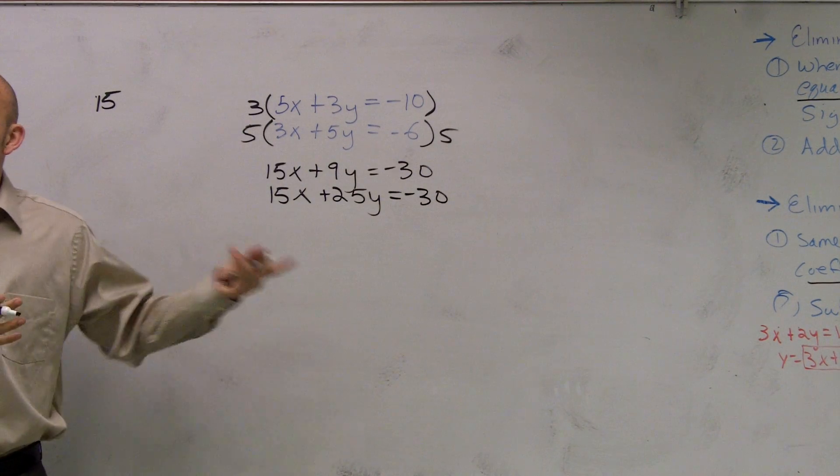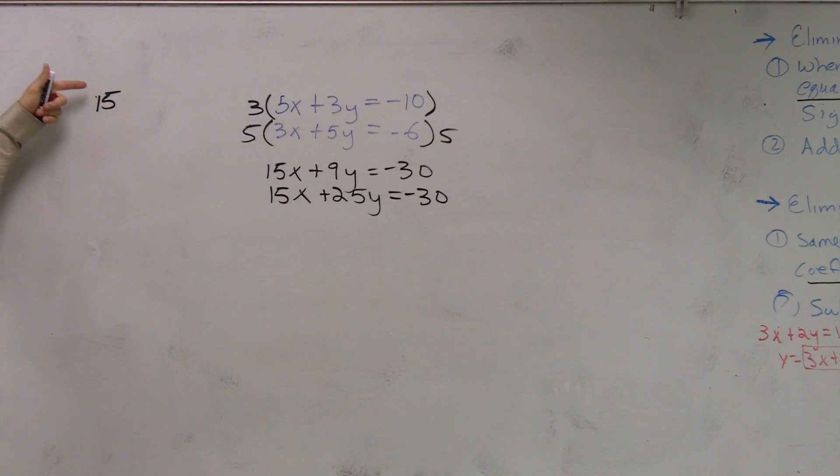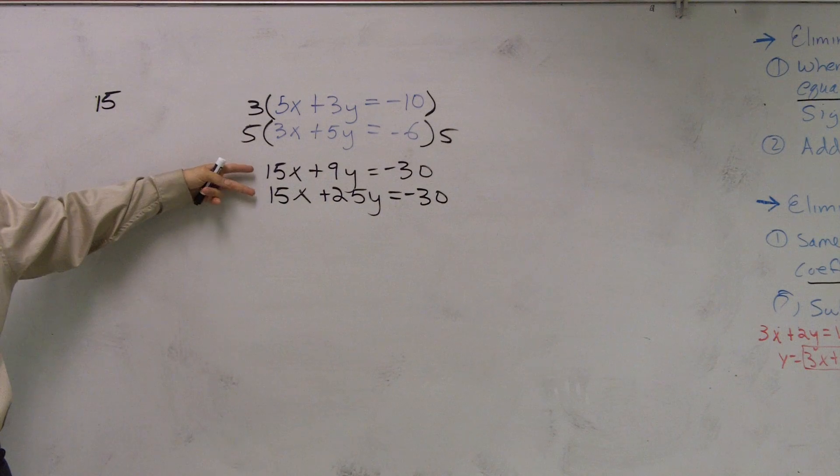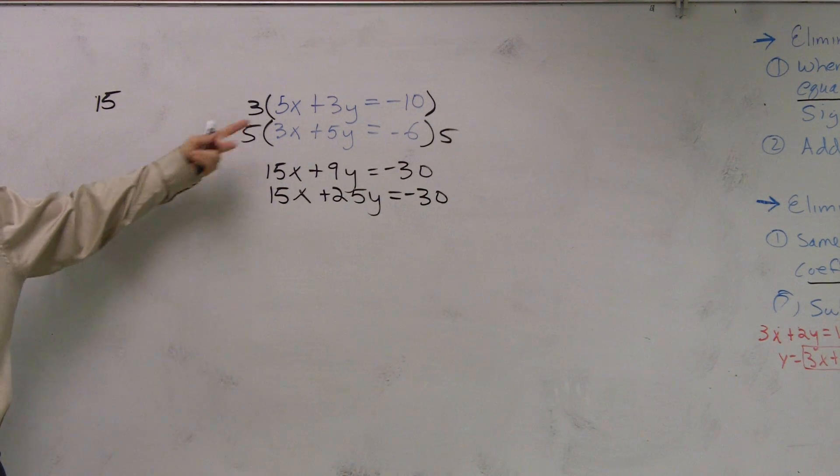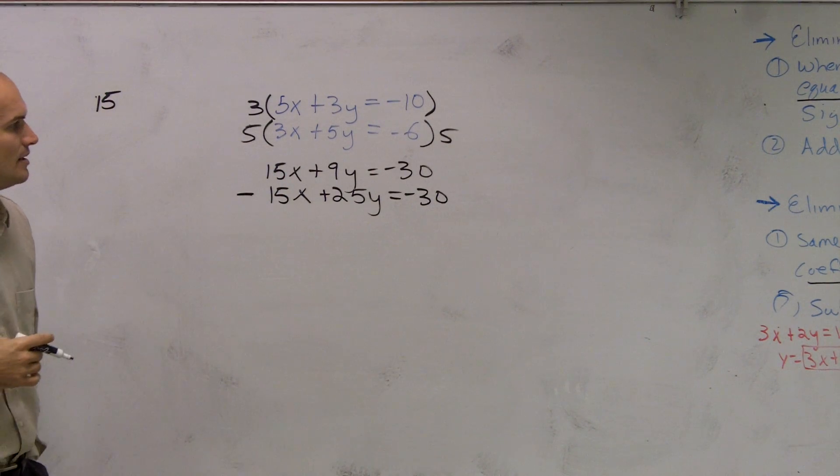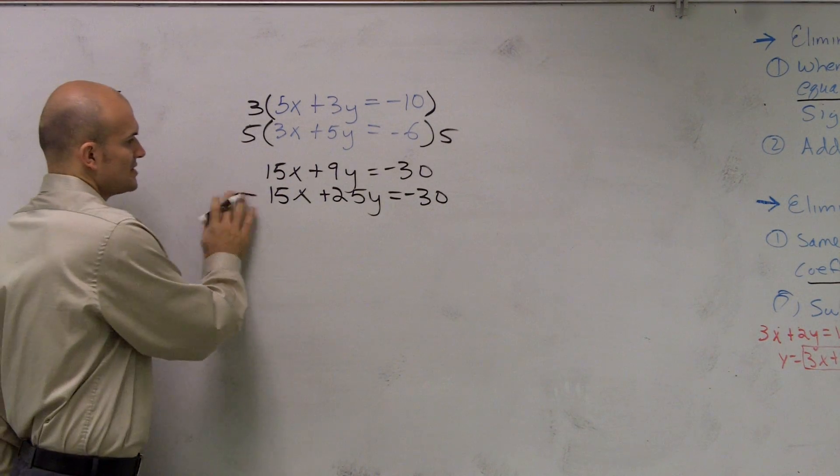So now what I've done, just by doing that, by understanding that LCM was 15, now I have the same number in front for my x's, right? So now I can use elimination for this. So since they're the same number and they're the same, and actually, you know what? Let me make this easier.